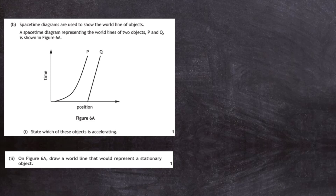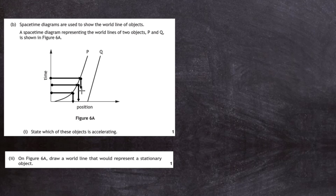Question 6b: space-time diagrams are used to show the world lines of objects. A space-time diagram represents the world lines of two objects P and Q shown in figure 6a. For one mark, we're asked to state which object is accelerating through space-time. The world line of P is accelerating because its position is not evenly spread out. Taking equal time intervals, the corresponding positions are not evenly spaced.